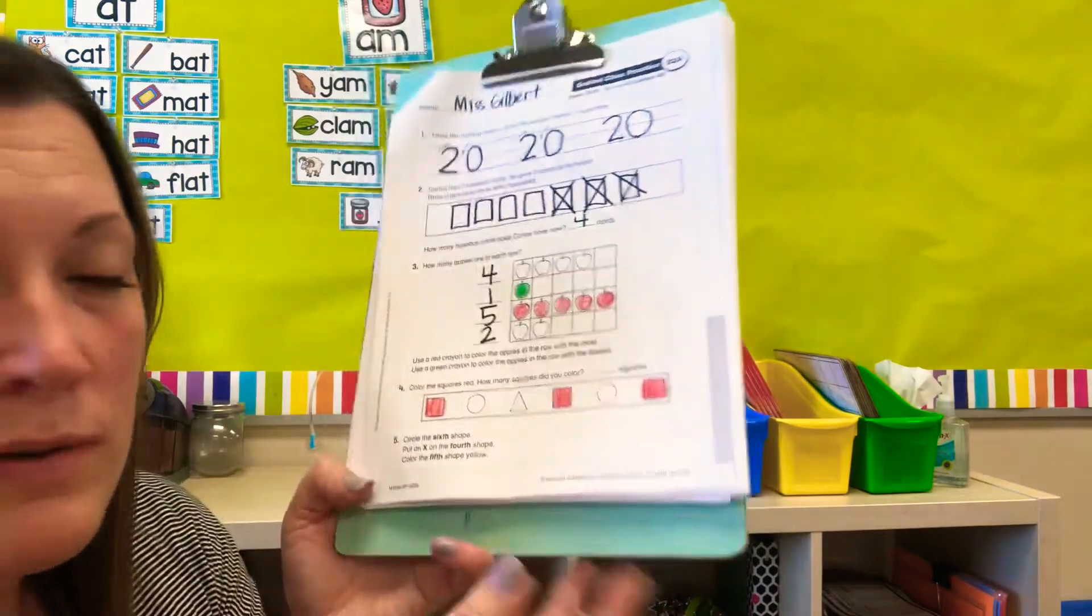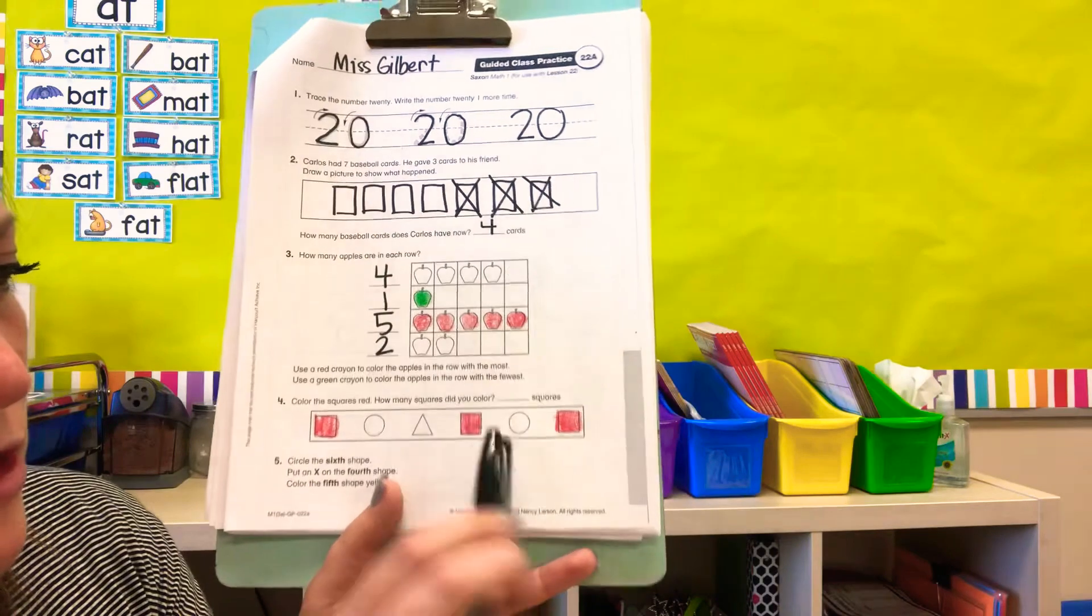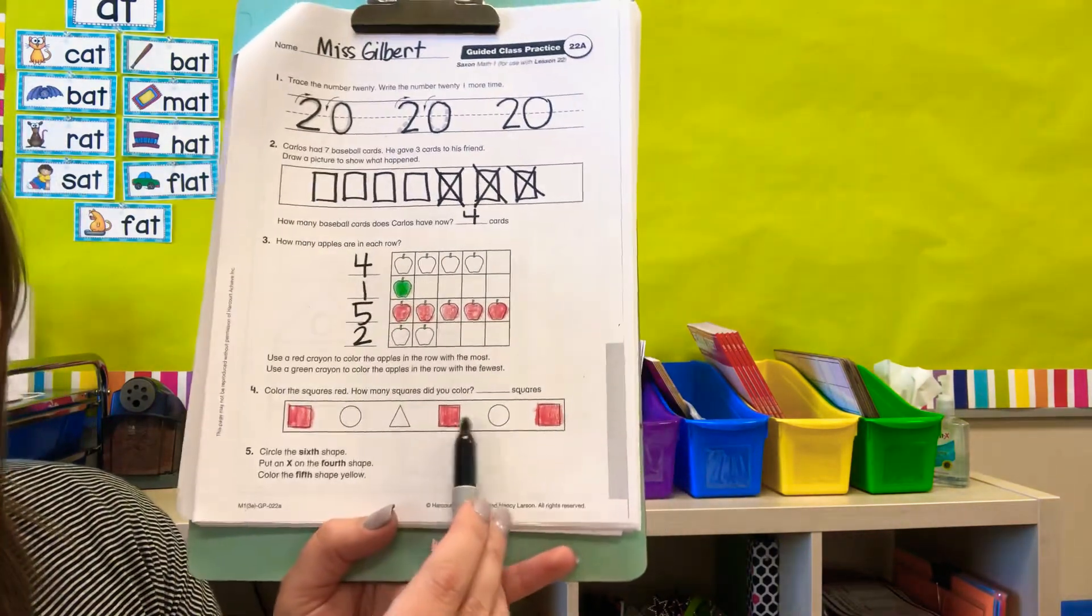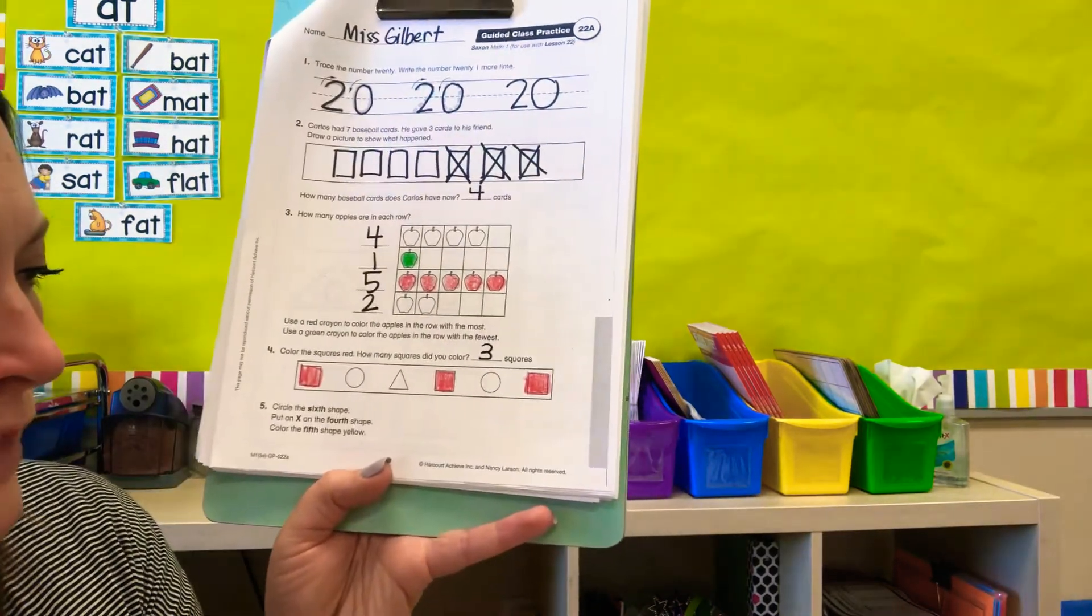Okay. This one has a lot of, oh wait, actually we missed a part on number four. Color the squares red. How many squares did you color? How many squares did we color? One, two, three. Write a three in the line right above that circle right there. All right.